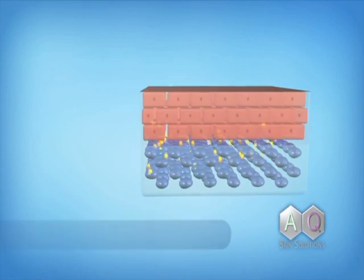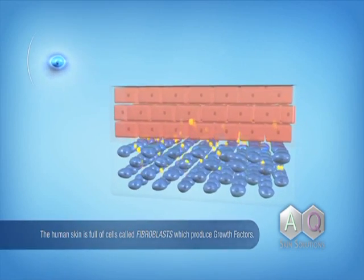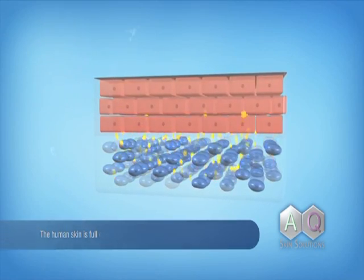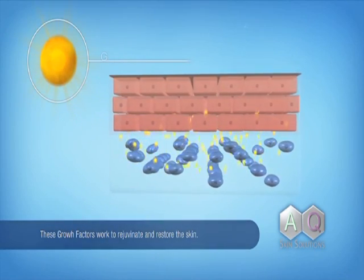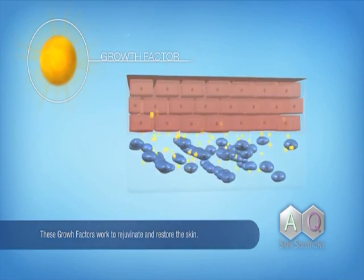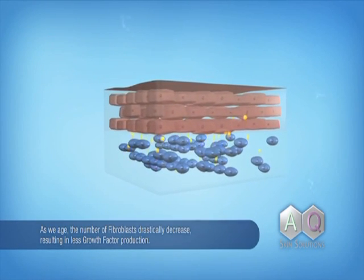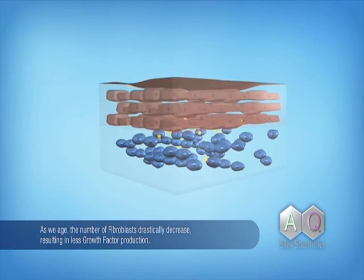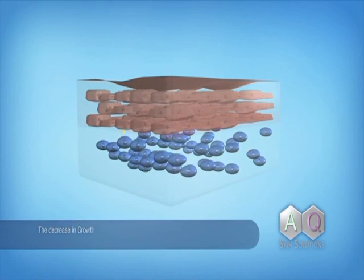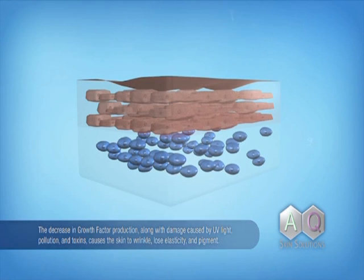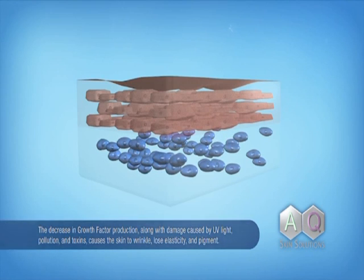The human skin is full of cells called fibroblasts which produce growth factors. These growth factors work to rejuvenate and restore the skin. As we age, the numbers of fibroblasts drastically decrease, resulting in less growth factor production. The decreasing growth factor production, along with damage caused by UV light, pollution, and toxins, causes the skin to wrinkle and lose elasticity.